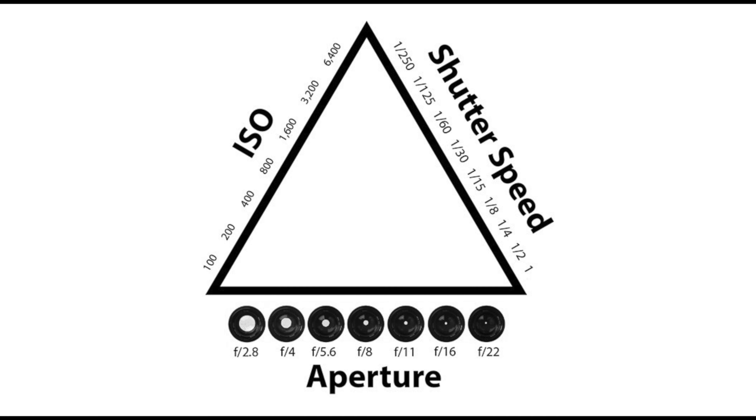There are three main things to getting a correct exposure or a desired exposure, and typically it's referred to as the exposure triangle. You have shutter speed, ISO, and aperture. The relationship between those three have to be just right in order to get the desired exposure, whether you want to be overexposed, underexposed, or correctly exposed.